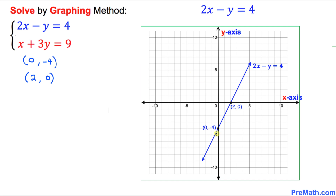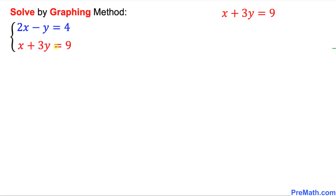Here is our blue graph for 2x minus y equals 4. Now let's focus on the red equation: x plus 3y equals 9. The easiest possible way is once again to create a T-chart. Put x over here and y over here, and first I want to pick x equal to 0.